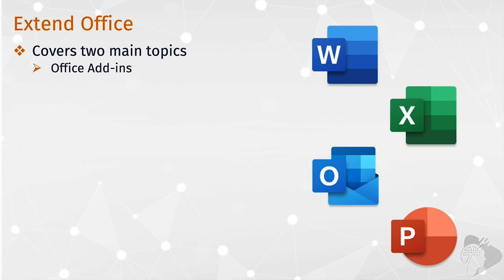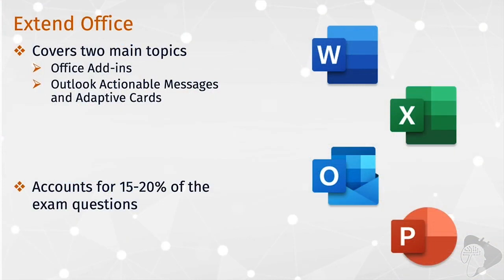The other topic grouped into this workload is adaptive cards. You need to understand what they are and what they're used for, and you'll see how they're used in Outlook as something called actionable messages. Adaptive cards will be covered more deeply in the Microsoft Teams chapter. This workload accounts for about 15% to 20% of all questions on the exam — it's not one of the more heavily emphasized sections, like Azure AD, Microsoft Graph, or Teams — probably the least important of the five workloads, but still making up 15–20% of exam questions.